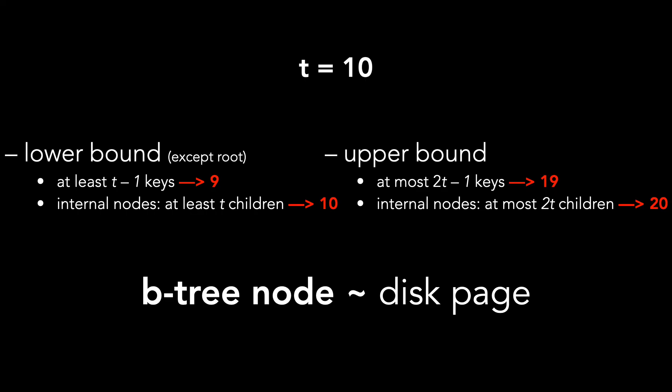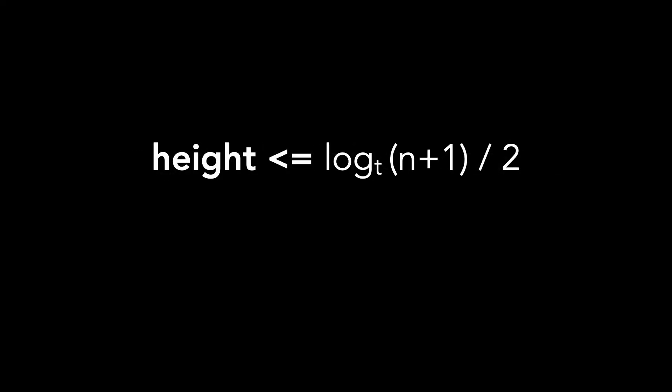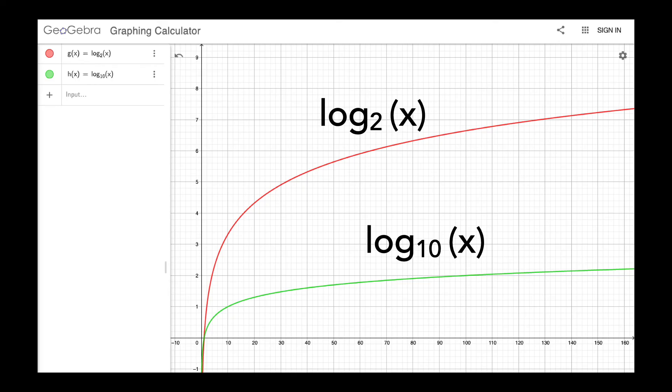The height of a B-tree is proportional to the number of disk operations. The height of a B-tree is log base T of (n plus 1) divided by 2. Using big O notation, the height of a B-tree is less than or equal to O(log n). In reality, the logarithmic base is the value of T. Looking at the graph, log base 10 increases much slower than log base 2. Thus, if T is larger, the height is smaller, and we can reduce disk IO.